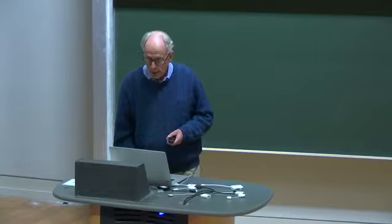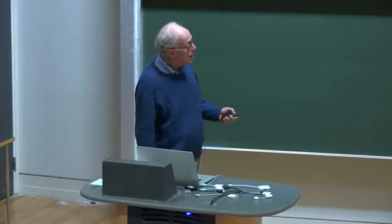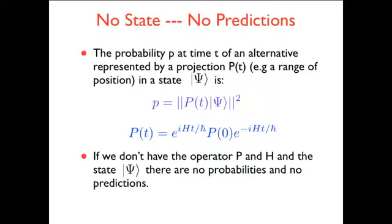If you don't have any state, then you don't have any predictions. Because even in ordinary quantum mechanics, the probability of some alternative, like a range of position, is some projection operator acting on the state. You take the square of it. If you don't have the state, then you don't get any predictions.